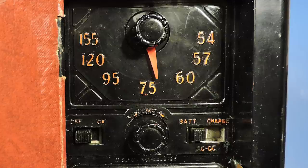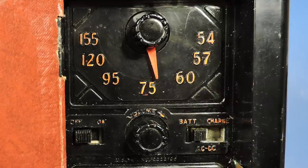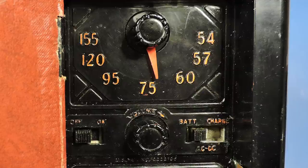The very top knob is the tuning. Then below that to the left is the on-off switch and in the center we've got the volume control and then on the right is the battery AC DC switch.